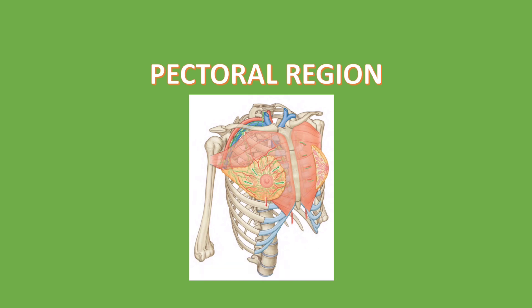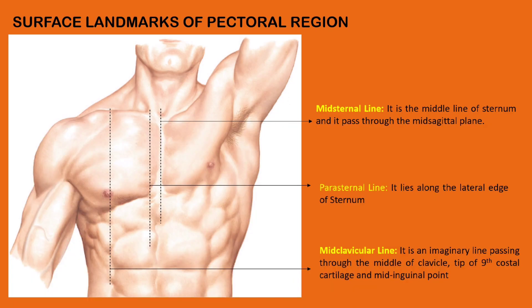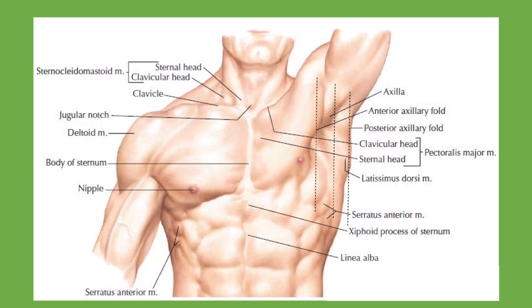Along with the pectoral fascia and clavipectoral fascia. Clinically, the thoracic and pectoral region can be studied using anatomical lines. The first is the midsternal line, the second is the parasternal line, and the third is the mid-clavicular line. The mid-clavicular line passes through the middle of the clavicle, the tip of the ninth costal cartilage, and the mid-inguinal point.